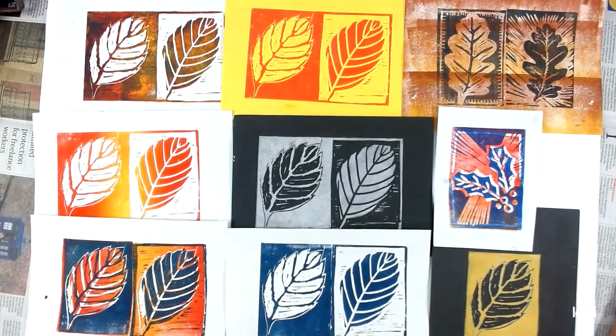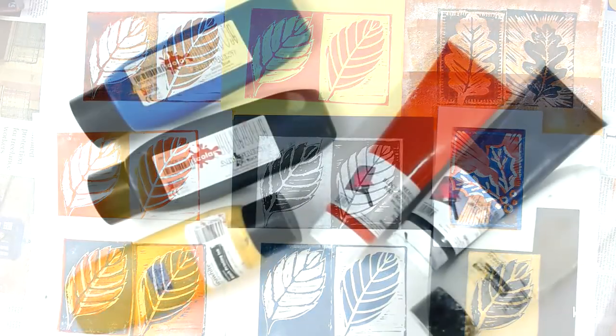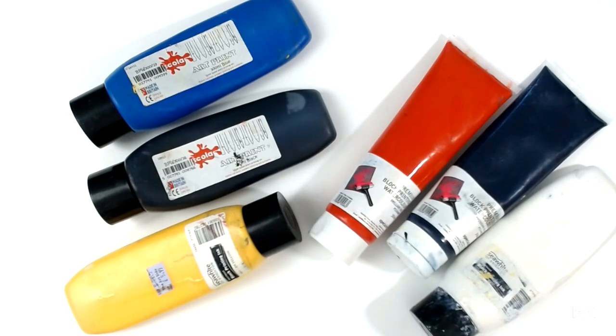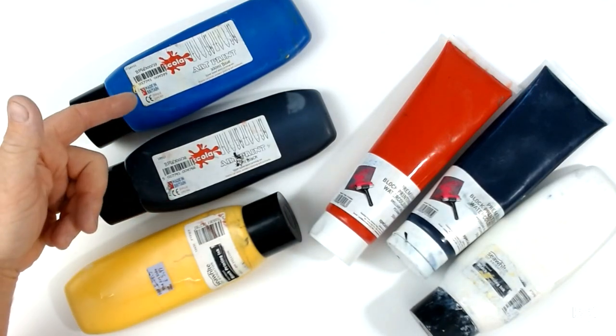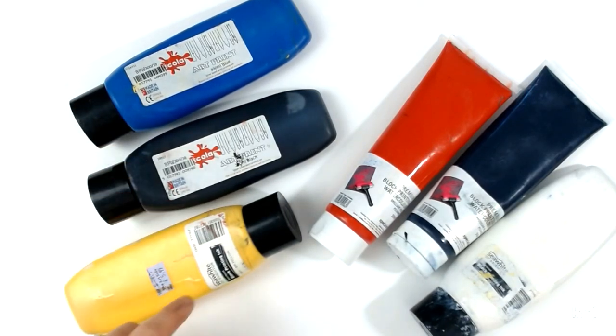First of all, a quick look at inks. If you shop around, you can get five or six basic colors for around about twenty pounds, for example from Hope Education or Baker Ross. Hope Education are doing special deals for homeschooling at the moment. These are pretty good, often the make of Scola, sometimes Seawhite.